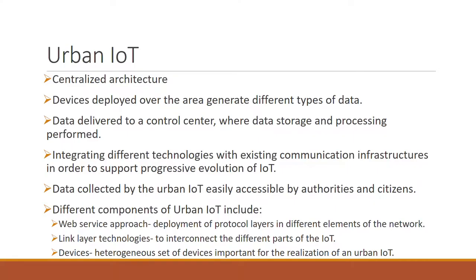Urban IoT is proposed as a solution for the heterogeneous technologies currently used. The primary characteristic of urban IoT infrastructure is its capability of integrating different technologies with existing communication infrastructures. With the interconnection of other devices and realization of novel functionalities, urban IoT has a centralized architecture where devices are deployed over the area and generate different types of data. This data is delivered to a control center where data storage and processing is performed.